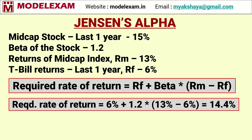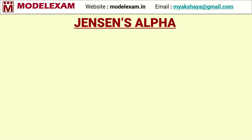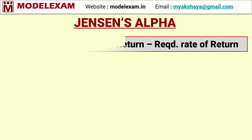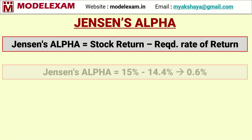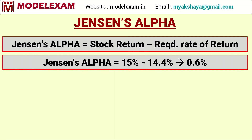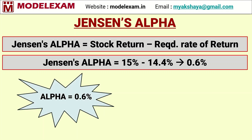Now see the case study. Our stock has given 15% return, which means it has given more than the required rate of return. Jensen's alpha is given by the formula: Jensen's alpha equals stock return minus required rate of return. In our case, the stock return is 15% and the required rate of return is 14.4%, so Jensen's alpha is 0.6%.